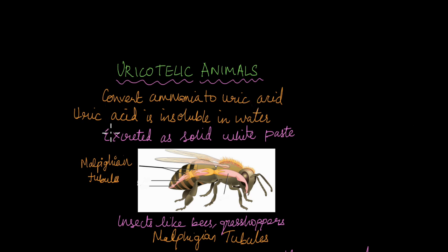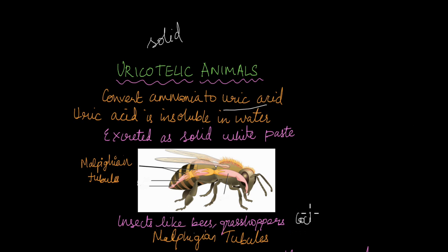What about uricotelic organisms? Uricotelic organisms convert ammonia to uric acid, which is extremely insoluble in water. Birds are uricotelic — when they go to the bathroom, they produce a solid white paste, which is why bird droppings are solid and white. Insects like bees, grasshoppers, and cockroaches are also uricotelic and have structures known as Malpighian tubules that concentrate uric acid, which then mixes with solid waste from the gastrointestinal tract and is excreted.